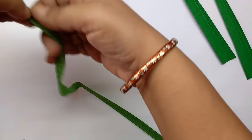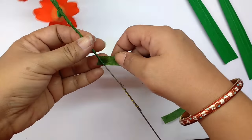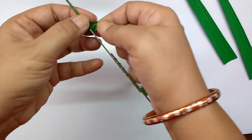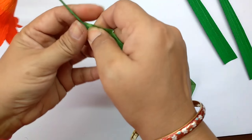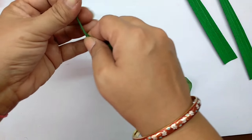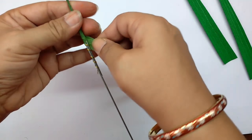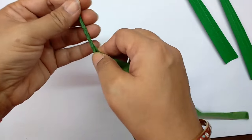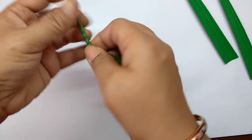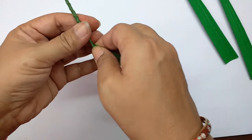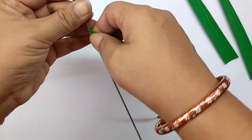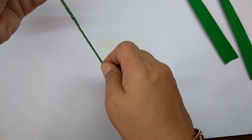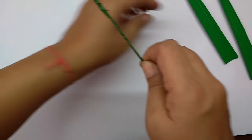Now take the tape and start winding from where we left off. You can attach a leaf.